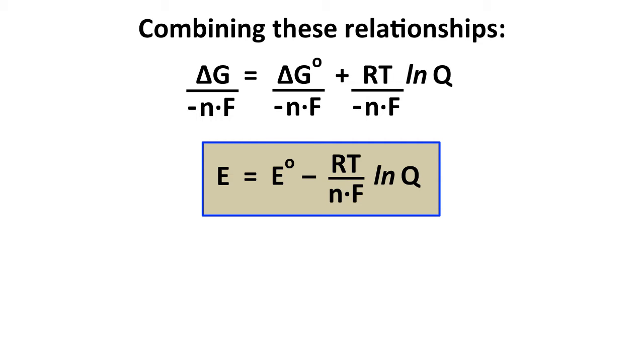E = E° - RT over nF ln Q, where R is of course the known constant we've been using quite frequently, T is the temperature in Kelvin, n is the number of moles transferred, and F is the Faraday constant.